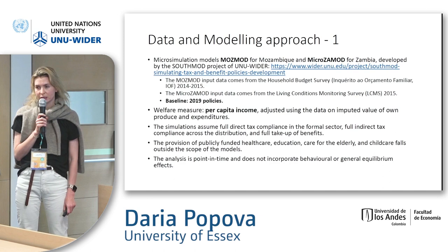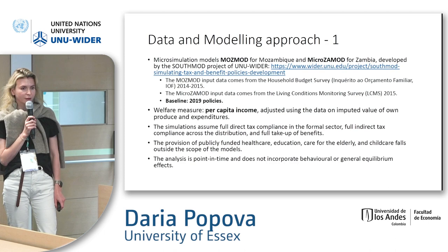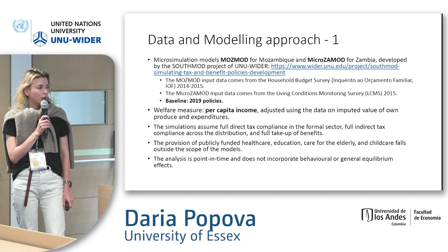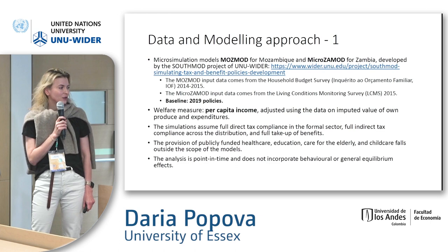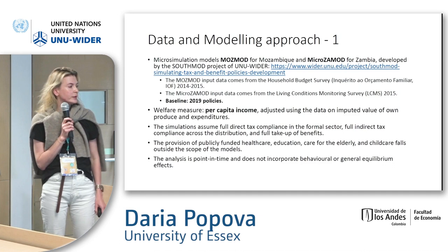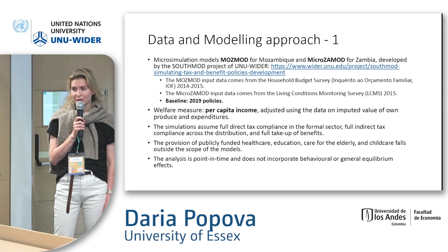I have adjusted the income measure because there are issues with zero incomes, so I used expenditure to impute so-called unreported incomes. A couple of disclaimers: the simulations assume full direct tax compliance in the formal sector, so taxes are modeled for employees in the formal sector; full indirect tax compliance across the distribution; and full take-up of benefits, which might be somewhat problematic, but at this point there is insufficient data to account for non-take-up.